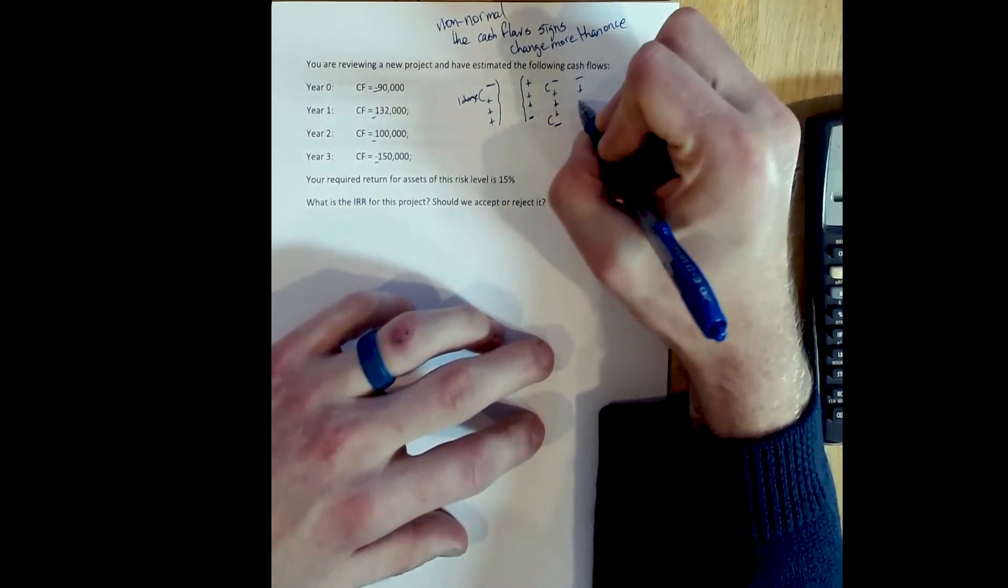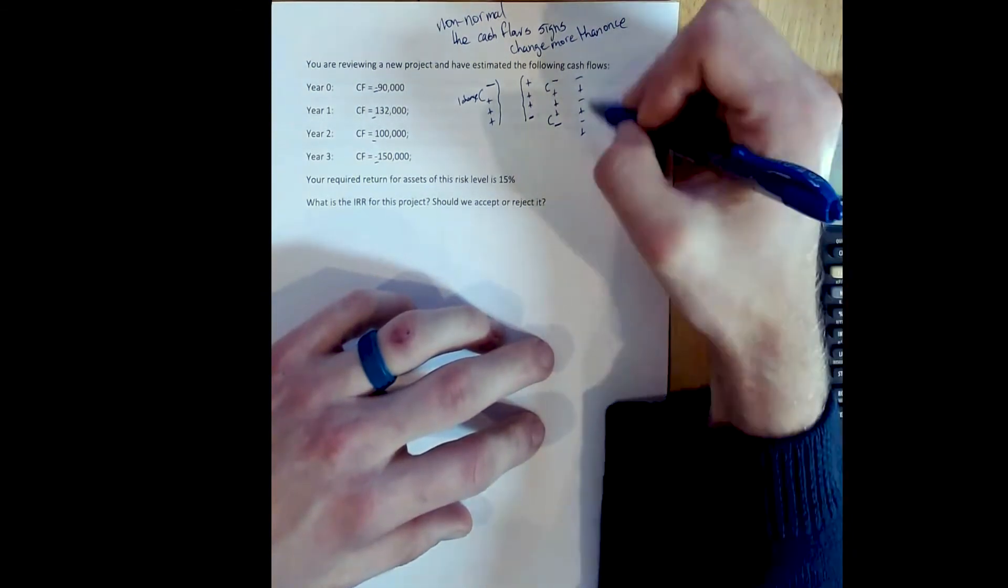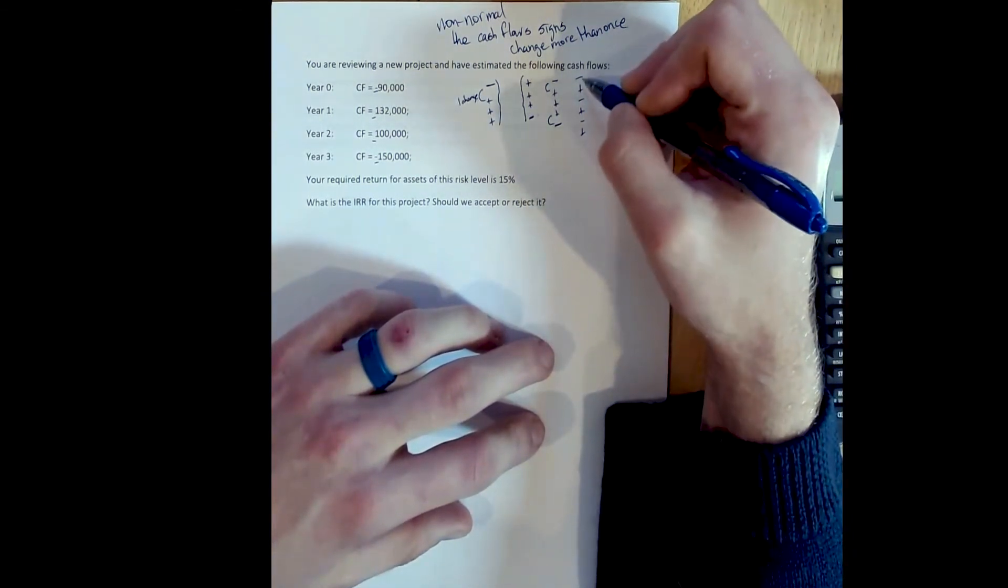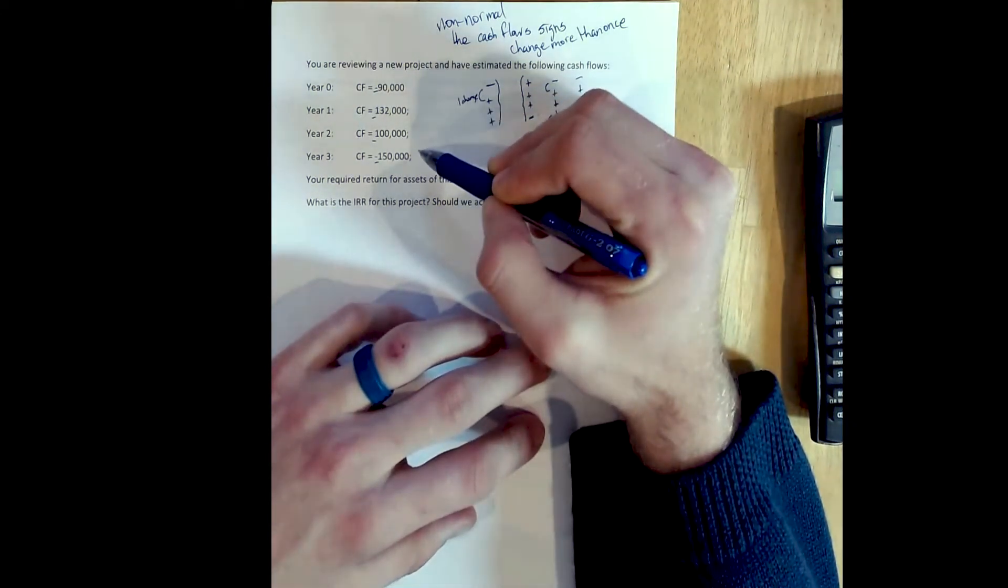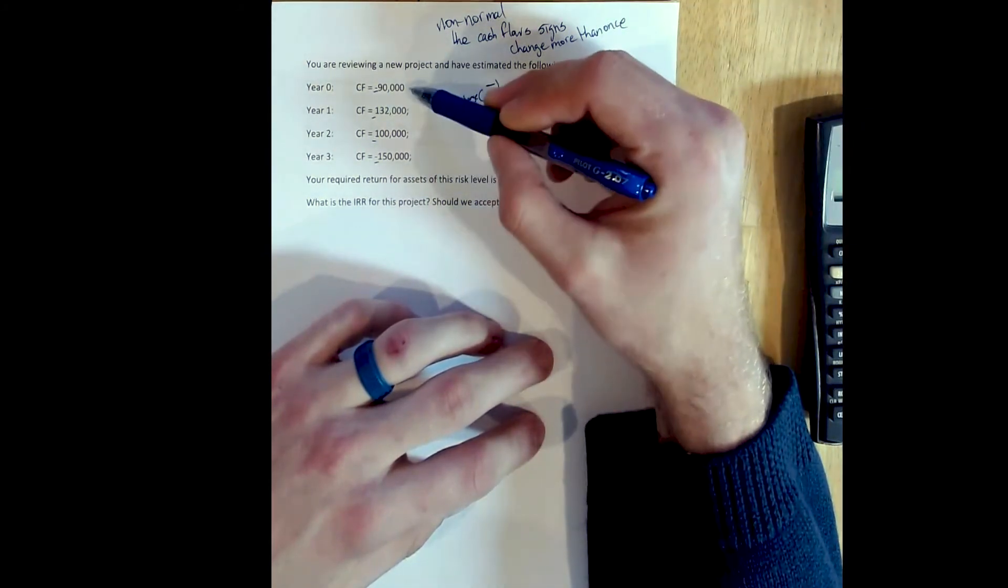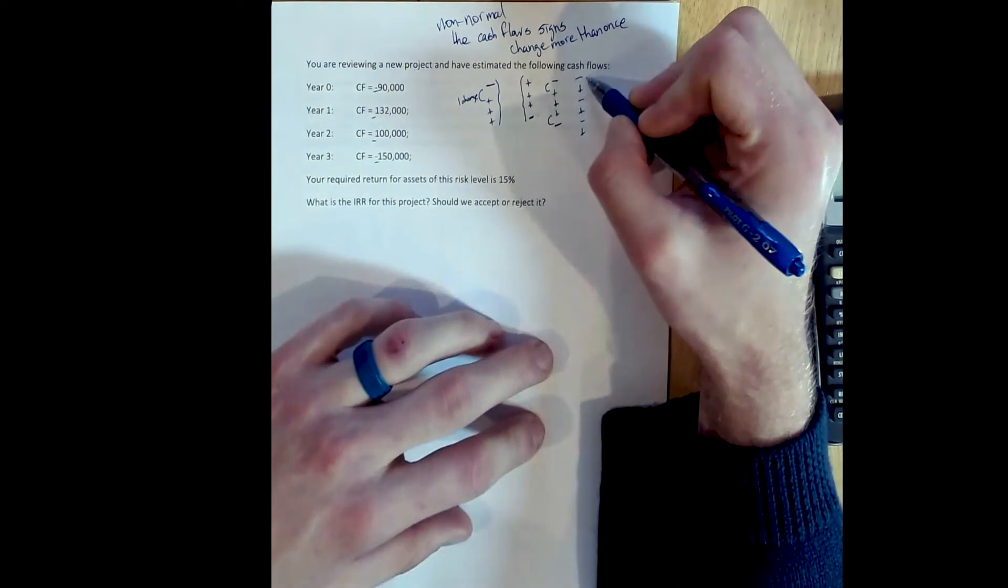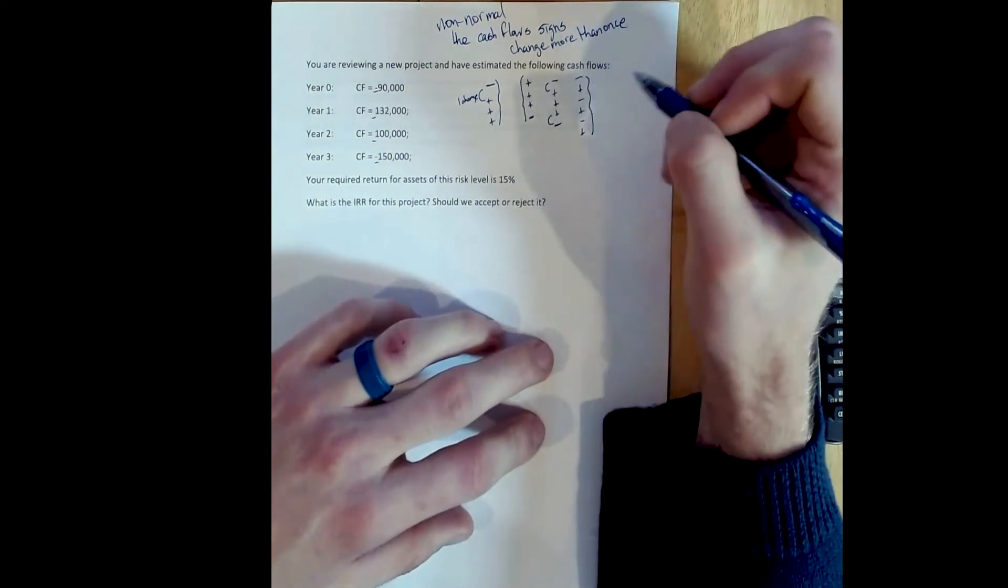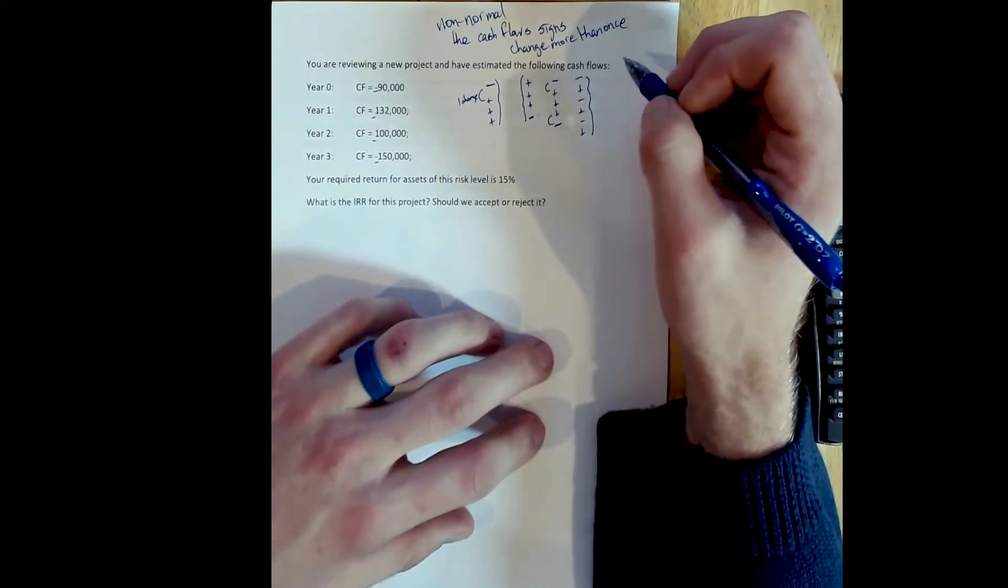But it could also just be any series of randomly positive or negative cash flows. And of course, even though we might see this in practice, remember that the cash flows for a project we are analyzing are projected cash flows. So these cash flows are what we expect to happen, not what will actually happen. So it would be very rare to expect that the cash flows would change signs this many times for a project, not impossible, but unlikely.